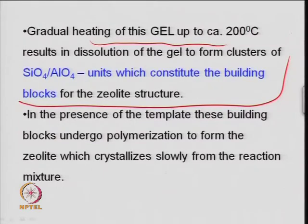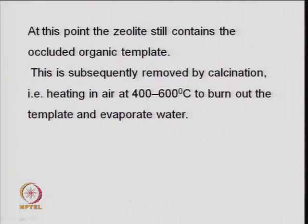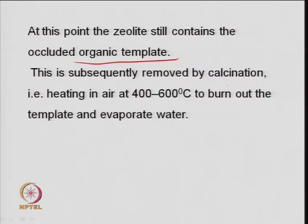The crystallite slowly forms from the reaction mixture. How the crystals grow is important - crystals grow during the nucleation step as a function of temperature and time, and finally you have a definite structure of the zeolite. At this point the zeolite contains some organic template, which is removed by calcination - heating in the presence of oxygen or air in a temperature range of 400 to 600 degrees centigrade. This can be checked from TGA (thermogravimetric analysis) to find what temperature is required to remove the template.